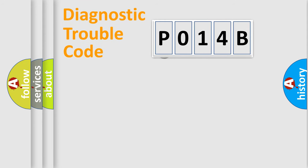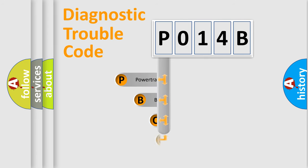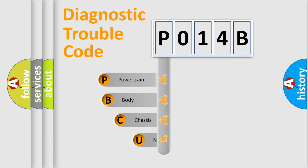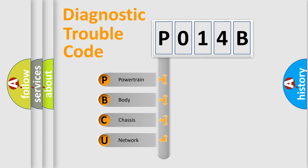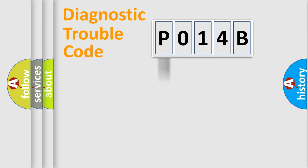First, let's look at the history of diagnostic fault code composition according to the OBD2 protocol, which is unified for all automakers since 2000. We divide the electric system of the automobile into four basic units: Powertrain, Body, Chassis, and Network. This distribution is defined in the first character of the code.